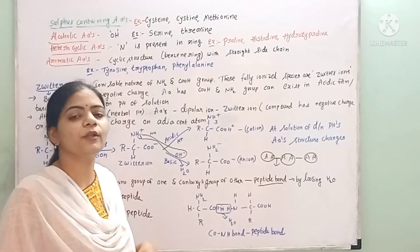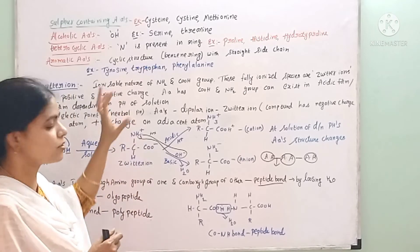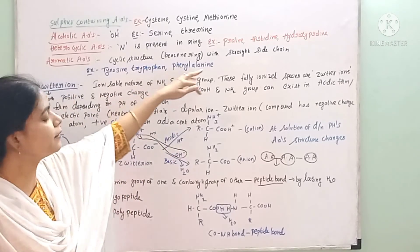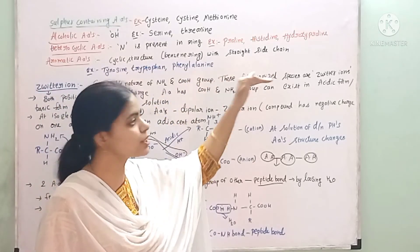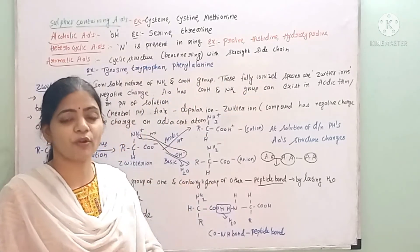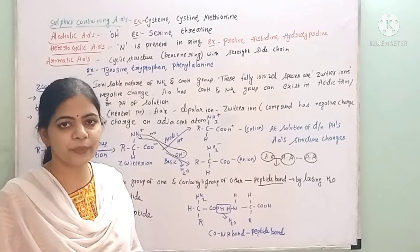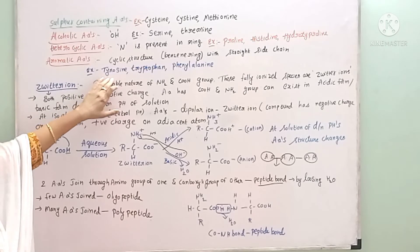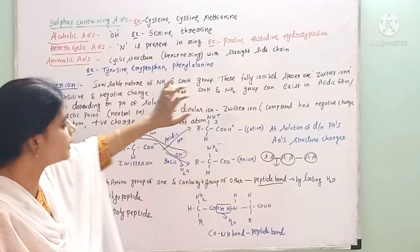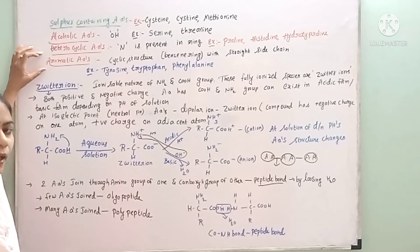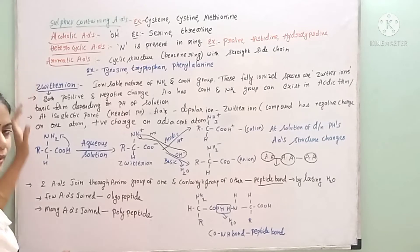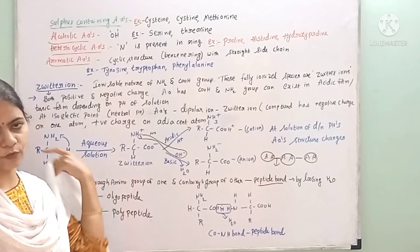Aromatic amino acids consist of a benzene ring — a cyclic structure in the form of a benzene ring — with a straight side chain attached. That side chain consists of a carboxyl group, an amine group, hydrogen, and so on. Examples of aromatic amino acids are tyrosine, tryptophan, and phenylalanine.